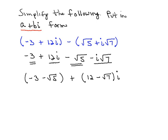So now the answer is in a plus bi form. And just to point out, that difference there would be our a value, and 12 minus the square root of 7 would be our b value.